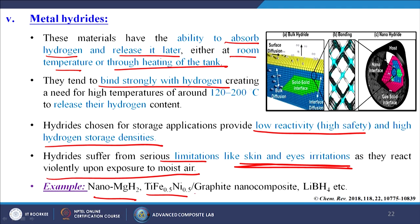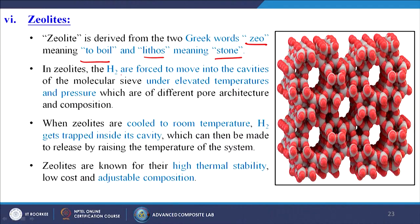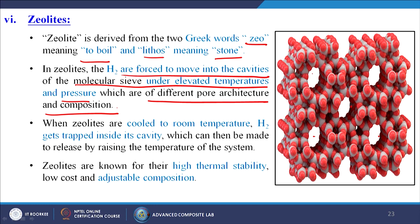Next is zeolites. The word 'zeolite' is derived from two Greek words — 'geo' meaning to boil and 'lithos' meaning stone — so we capture hydrogen and must heat the material to release it. In zeolites, hydrogen is forced to move into the cavities of the molecular sieve under elevated temperatures and pressure, which have different pore architectures and bulk compositions. When zeolites are cooled to room temperature, hydrogen gets trapped inside the cavity, which can then be released by raising the temperature of the system. Zeolites are known for their high thermal stability, low cost, and adjustable compositions.